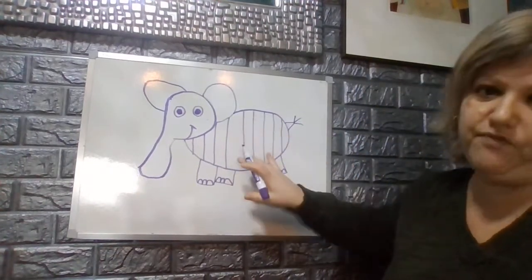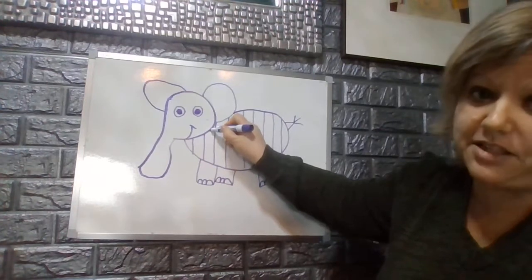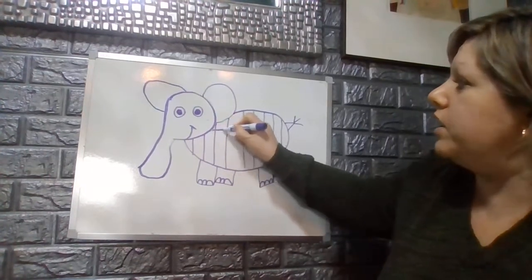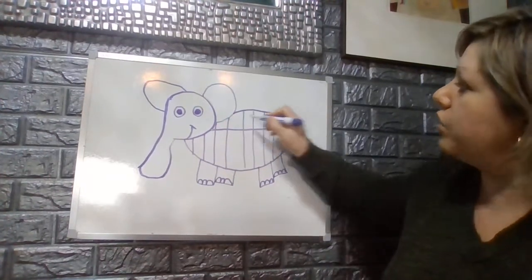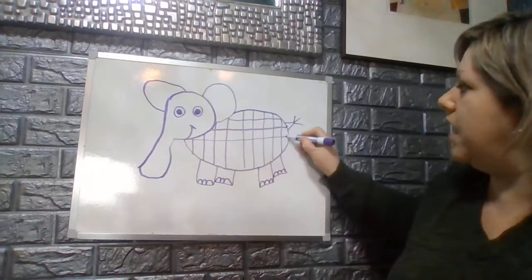So after I do the vertical lines, I'm now going to do my horizontal lines. Horizontal lines go straight across. I'm going to go left to right across the oval to make the squares using my horizontal lines.